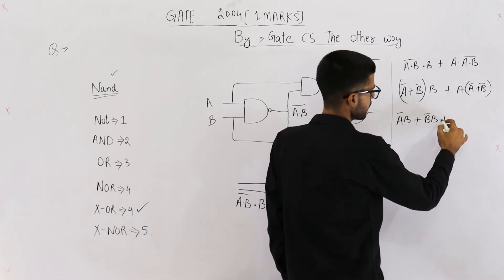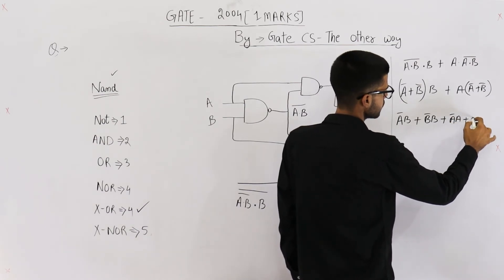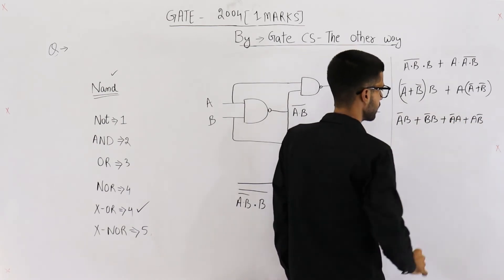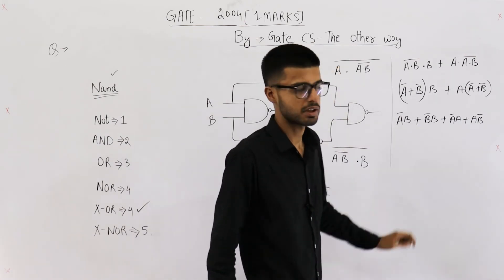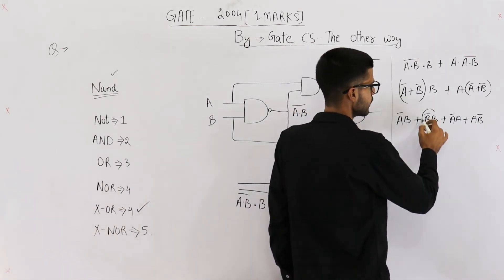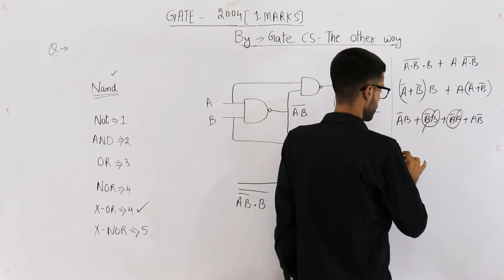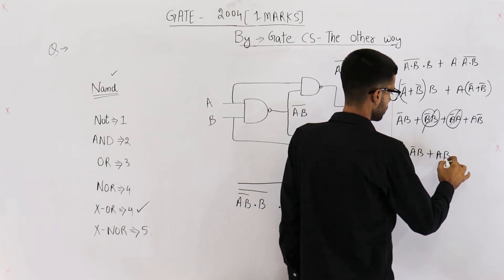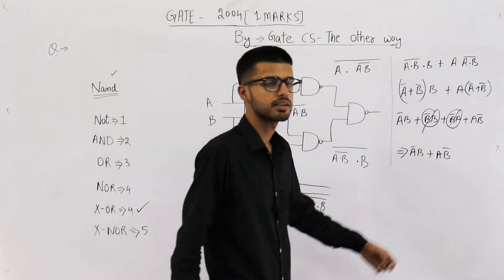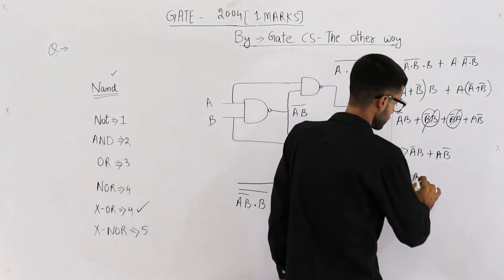B into B complement is zero. A into A complement is zero. So both of these will be neglected and what you are going to get is A complement B plus A B complement. This is the expression for XNOR gate. So this is A XNOR B.